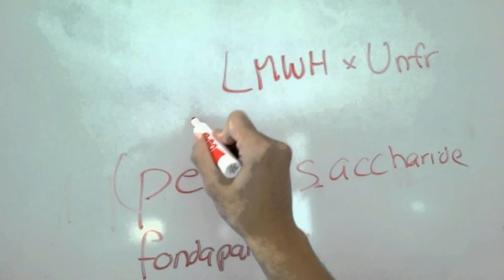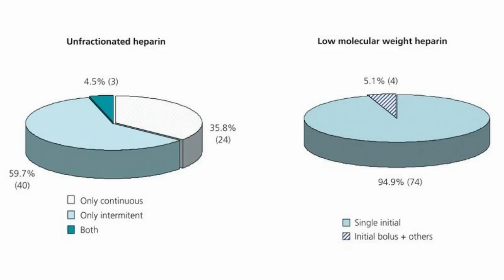Coagulation means forming blood clots to prevent blood loss due to excessive bleeding. When coagulation occurs in undesired situations and places inside our bodies — thrombosis — it is very dangerous because it can alter or reduce blood supply to organs and even be fatal.